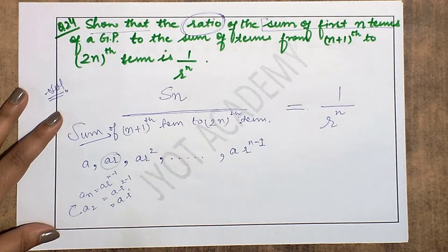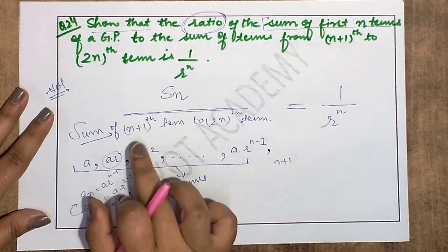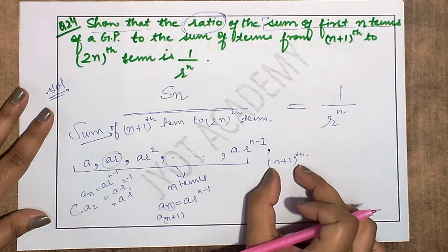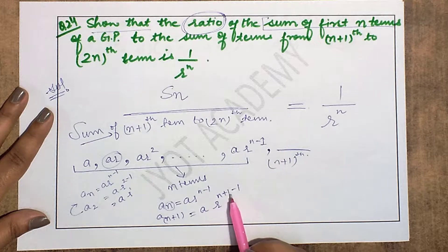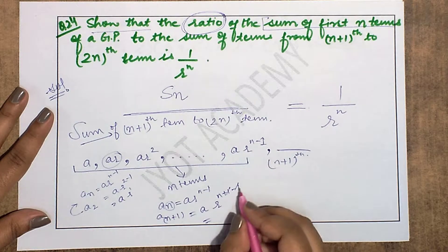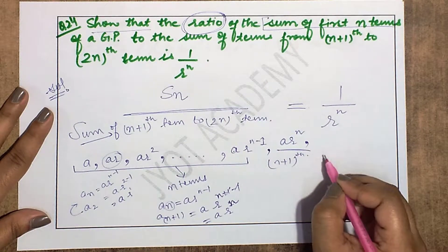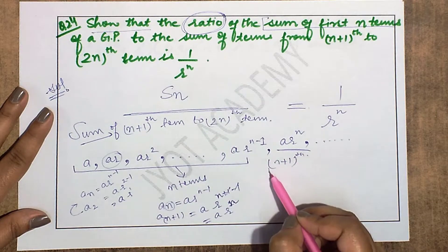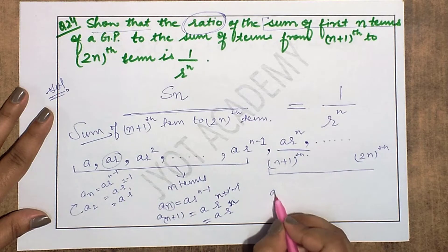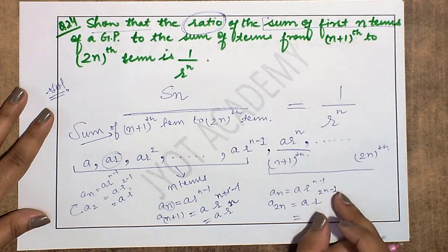After the nth term, the next is the (n+1)th term. Substituting n+1 into ar^(n-1) gives ar^n (the 1s cancel). Similarly, the (n+2)th term follows. We need the sum up to the 2nth term, so the last term is found by substituting n=2n: ar^(2n-1). This is the 2nth term.